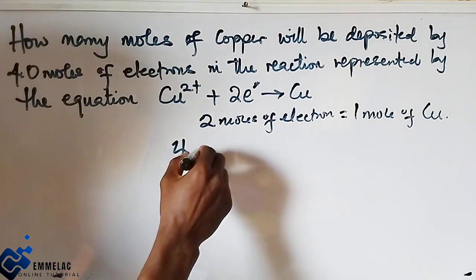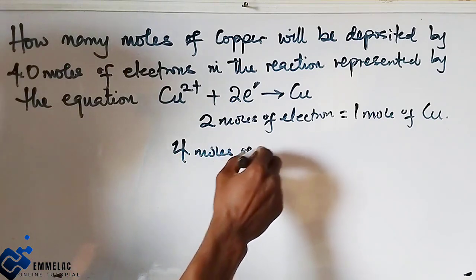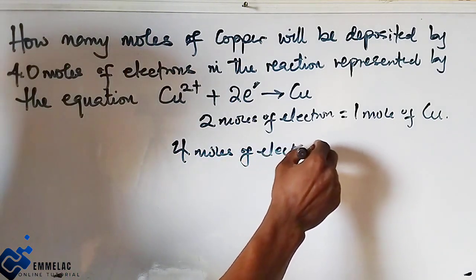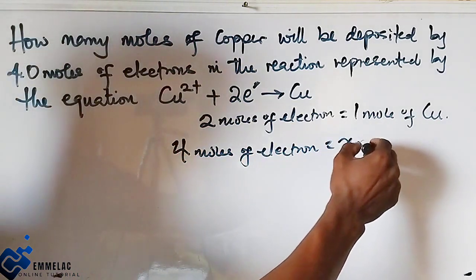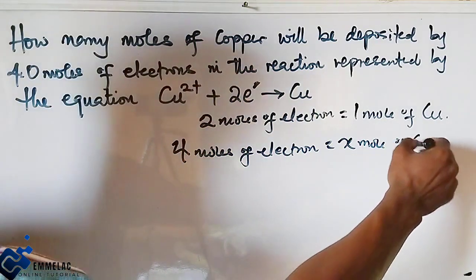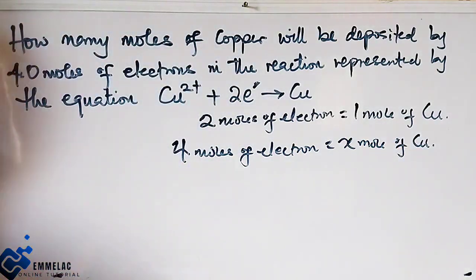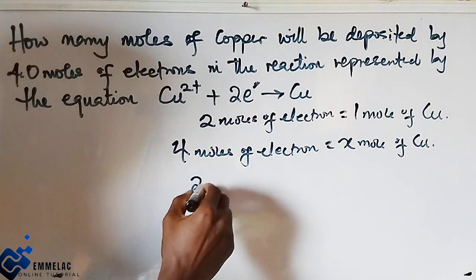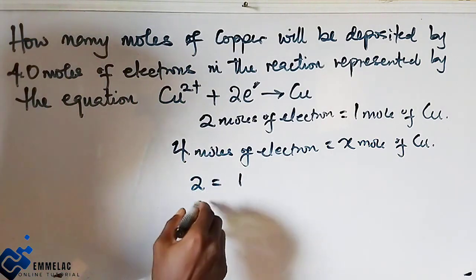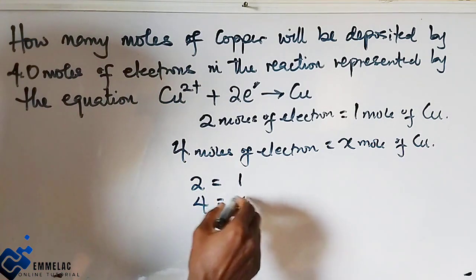So an assertion of four moles of electron will give X mole of copper. So this is the same thing. I am just saying that two equals one and four equals X.